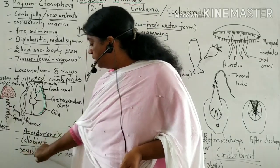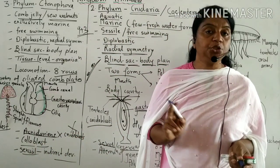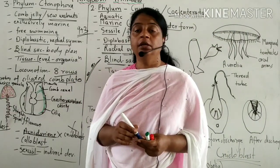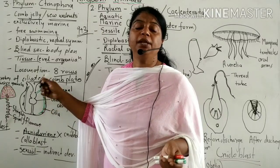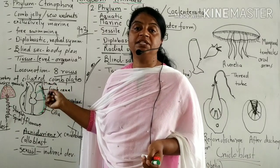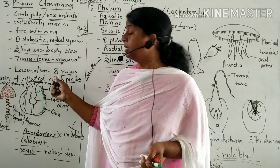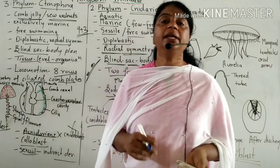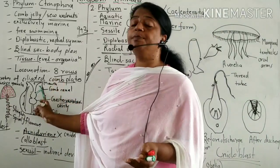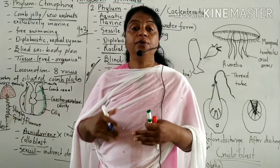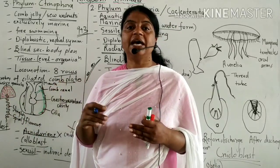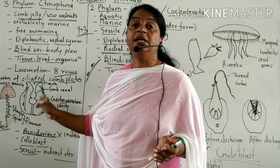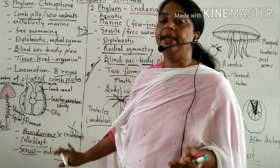Reproduction in Ctenophores is of only one type: sexual reproduction. These animals are hermaphrodite, meaning both male and female gametes are produced by a single animal. Their development is indirect — they do not produce young ones like themselves but pass through larval stages before forming a mature adult.